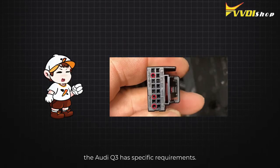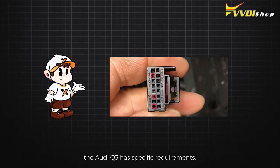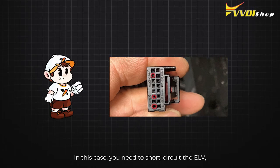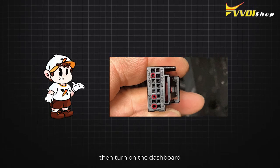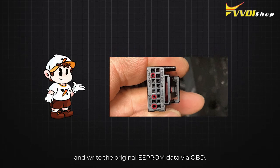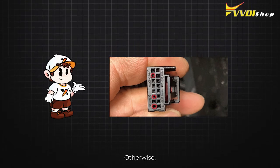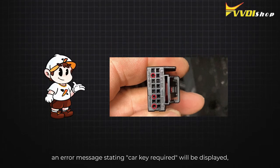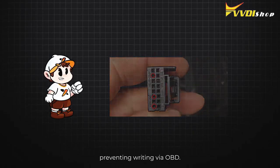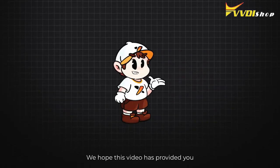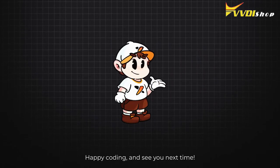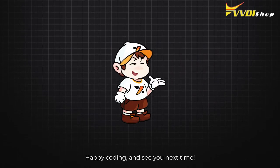Additionally, the Audi Q3 has specific requirements. In this case, you need to short circuit the ELV, then turn on the dashboard and write the original EPROM data via OBD. Otherwise, an error message stating 'car key required' will be displayed, preventing writing via OBD. We hope this video has provided you with valuable insights. Happy coding and see you next time.